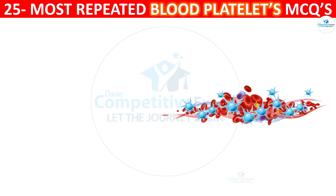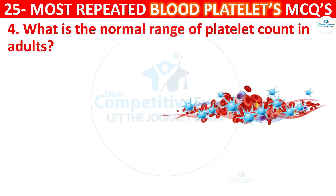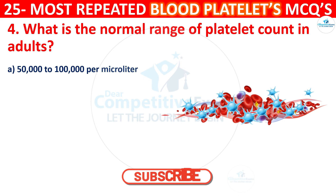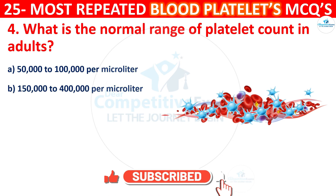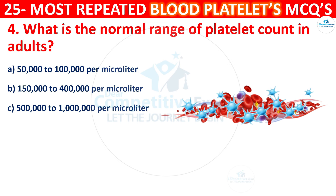Question 4. What is the normal range of platelet count in adults? The options are: 50,000 to 1 lakh per microliter; 1 lakh 50,000 to 4 lakh per microliter; 5 lakh to 10 lakh per microliter; or 1,000 to 5,000 per microliter.